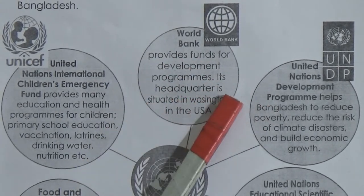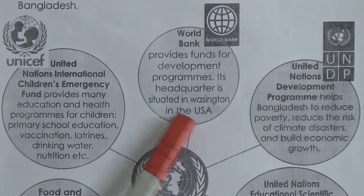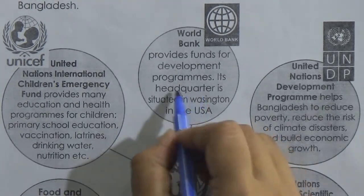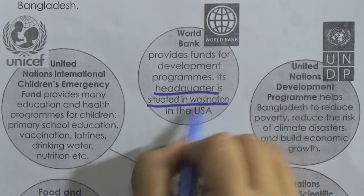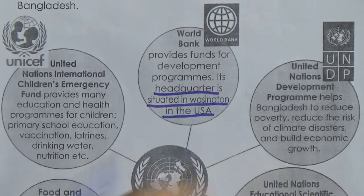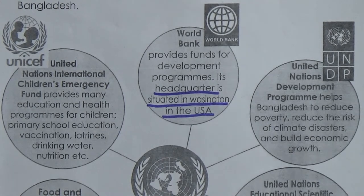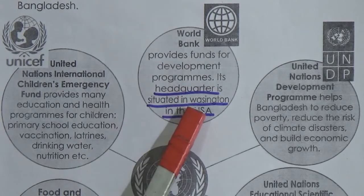First, the World Bank — in short, WB. The World Bank provides funds for development programs. Its headquarters is situated in Washington, USA. Different countries can take loans from the World Bank to fund development programs.